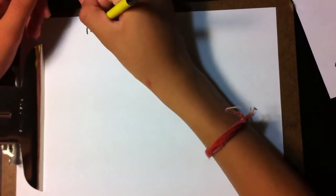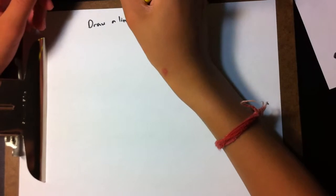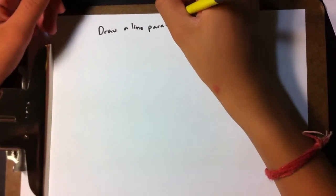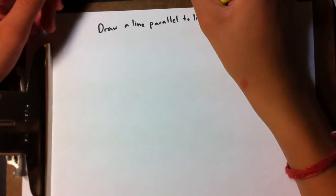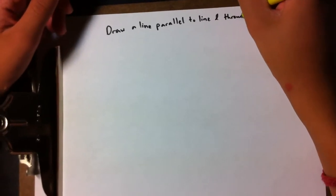So you're in math class doing your geometry, doing your constructions, and now your teacher asks you to draw a line parallel to line L through point P.